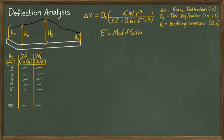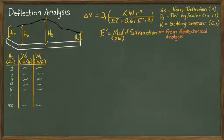E prime is the modulus of soil reaction measured in PSI. This value comes from a geotechnical analysis of the soils where the pipeline is being installed. Without a specific study, it is possible to make conservative estimates from past studies in the region.